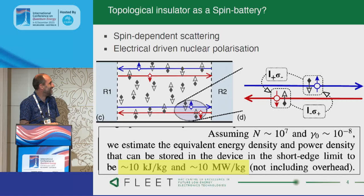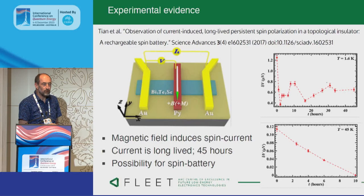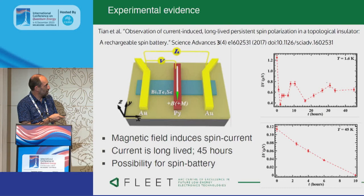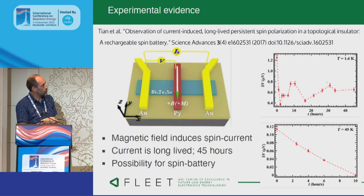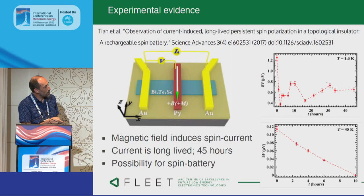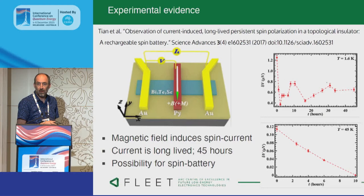Before we get too far into that, this effect really does exist. Here's an experiment — the group at Purdue did it. Here is a topological insulator — bismuth telluride selenide — which has a topological edge surface state. They put some gates on, drove current through in various ways, and they're seeing a voltage induced across the contacts which is time dependent — at 1.6 Kelvin and at 45 Kelvin. This is 10 hours, and this is 40 hours. For those of you who know solid-state physics, there are very few things other than nuclear spins that can last that long. So they really were starting to polarize all the nuclear spins, and that starts to look like a sensible battery.